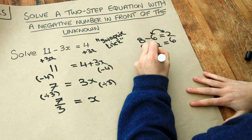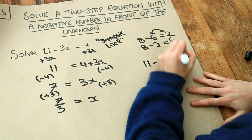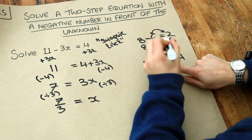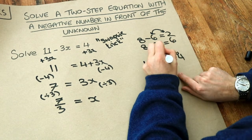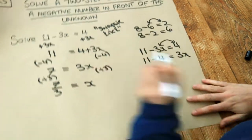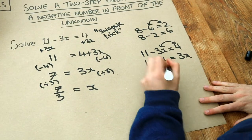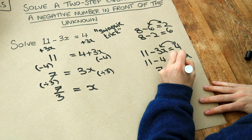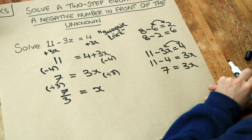So if we apply that to 11 minus 3x equals 4, we could swap the thing we're subtracting, the 3x and the 4, to get 11 minus 4 is equal to 3x. And suddenly this equation is much simpler, because 11 minus 4 is 7. And we get to this part of the equation quite quickly.